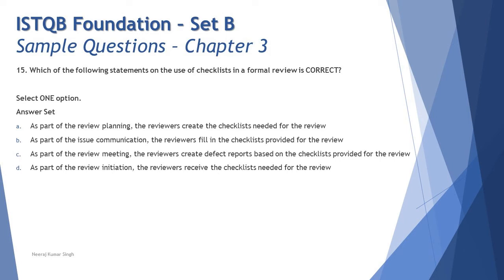Question 15: which of the following statements on the use of checklists in a formal review is correct? You need to recall your understanding of checklist-based techniques and formal reviews. Option A says: as part of review planning, the reviewers create the checklist needed for the review. However, the checklist is created much earlier — it's an organization-level or product-specific document, not created by reviewers during the review. Checklist is a predefined thing, not created during the review process, so A is ruled out.